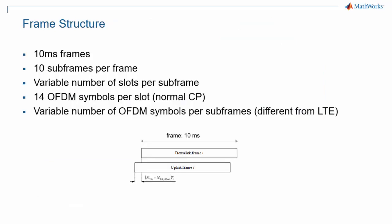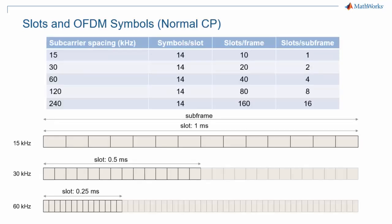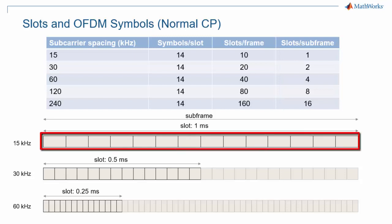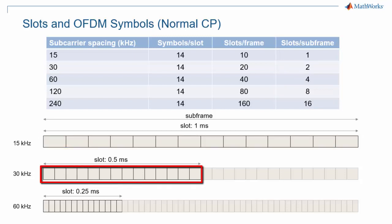5G NR retains the concept of a 10 ms frame divided into 10 one-millisecond subframes. There is also a concept of slot, but its definition is different from a slot in LTE. One slot is defined as 14 OFDM symbols, which corresponds to 1 subframe or 1 ms in LTE. Because of variable subcarrier spacing, the number of slots per subframe is also variable. As the subcarrier spacing doubles, the slot length is halved because the OFDM symbol length is halved, and the number of slots per subframe doubles, as shown in the last column of the table. The picture at the bottom of the slide illustrates the shortening of the slot length as the subcarrier spacing increases.